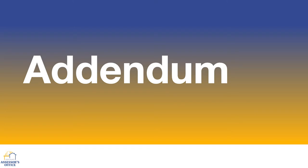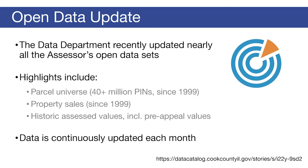Alright, so that's what we're working on. Some final things. If you are a regular browser of the Cook County Open Data Portal, we made a large update to all the assessor's open data sets. Highlights include the entire universe of parcels along with much attached data from 1999 until present, property sales from 1999, historical assessed values including pre-appeal values, and some other datasets as well. Those are all on the portal, you can use them for free, and we plan to continue to update them monthly.